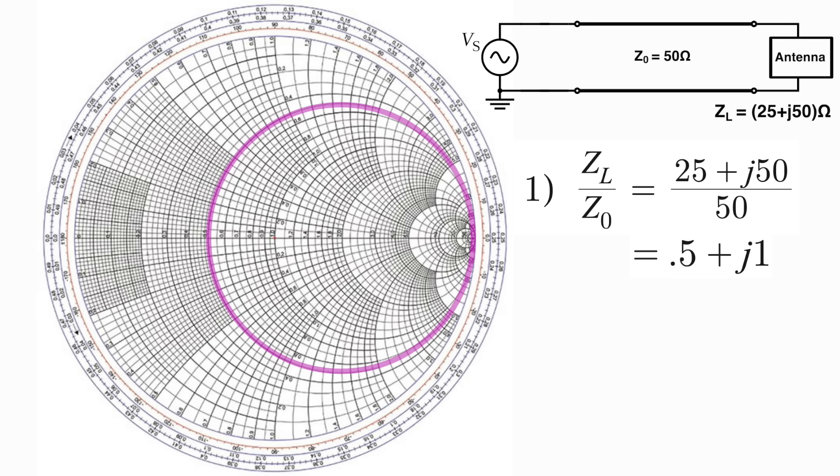Then for the imaginary part, you find that value out here, along the perimeter of the Smith chart. In our case, positive one can be found right here. The top is all positive values, aka inductive. If the value was negative one, then we find that on the bottom half of the Smith chart.